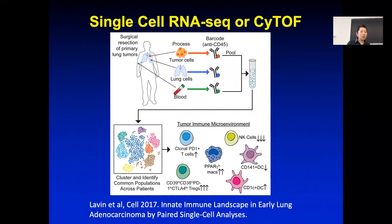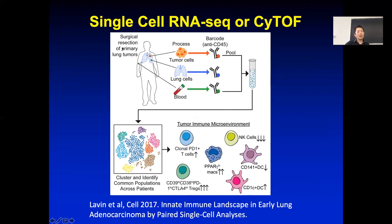Unfortunately, currently single-cell RNA-seq has not been the best approach for estimating different immune cell infiltration levels. This is because different immune cells and also cancer cells have different abilities to be made into a single-cell sequencing library. For example, cancer cells are actually quite vulnerable — once you take them out and put them into single cell, a lot of them just die. So estimating tumor purity based on single-cell RNA-seq doesn't give you a correct estimate, and this hasn't really been the best way to estimate immune cell infiltration.